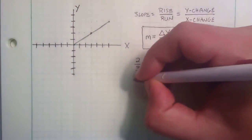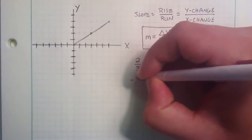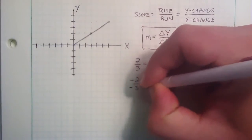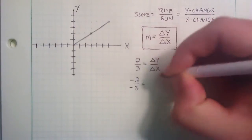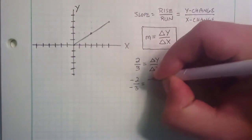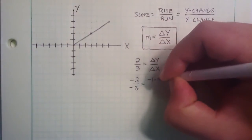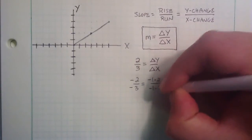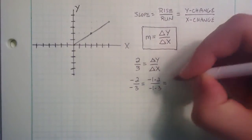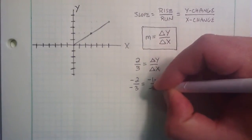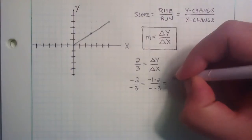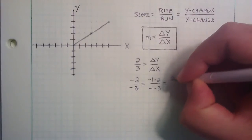We could also rewrite 2 thirds as negative 2 divided by negative 3, because this is simply negative 1 times 2 over negative 1 times 3. And negative 1 divided by negative 1 is simply 1, so it brings us back to 2 thirds.